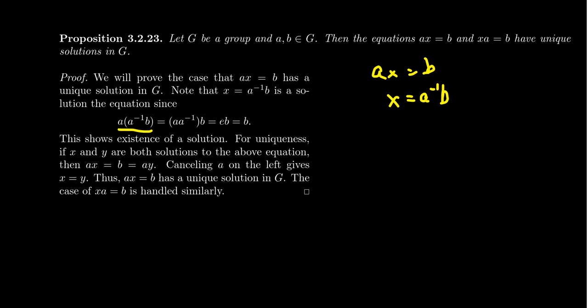If you replace x with a inverse b, you'll get a times a inverse b. Reassociate: you get a times a inverse times b. A times a inverse is the identity, and the identity times b gives you just b. We used all the axioms again. Existence of inverses was used, associativity was used, the identity was used. We used all the axioms of groups in that statement.